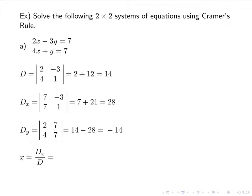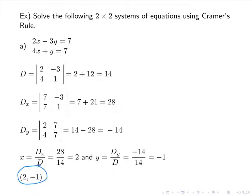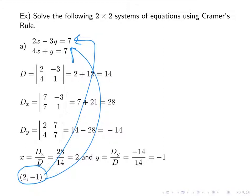So x is Dx over D, which is 28 over 14, which is 2. Y is Dy over D, which is negative 14 over 14, which is negative 1. My answer is (2, negative 1). Checking: 2 times 2 minus 3 times negative 1 equals 4 plus 3, which is 7. And 4 times 2 plus negative 1 also equals 7. Both equations check out.